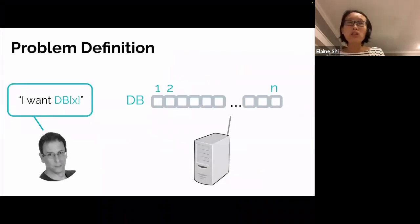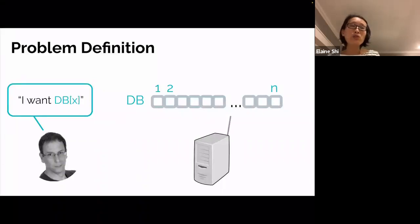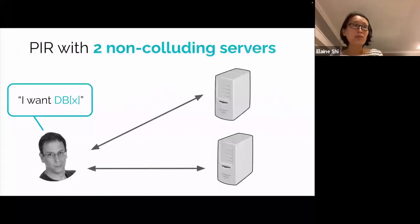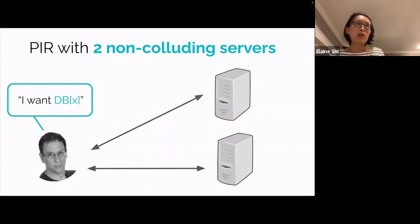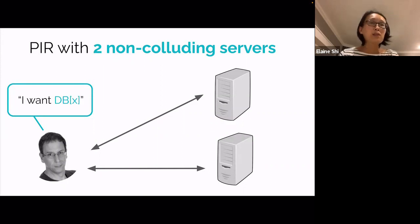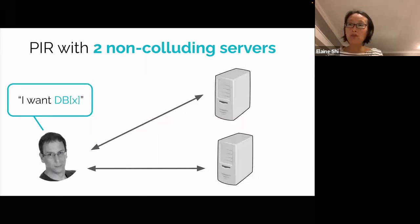More abstractly, imagine the database contains n bits. The user wants to retrieve the bit at some position x, also called the index, and the user doesn't want to reveal x to the server. In this talk, we will focus on the two-server scenario. Assume there are two servers that are non-colluding; we want to make sure that from each individual server's view, nothing is leaked about the user's query. Compared with the single-server setting, the two-server setting can often result in more efficient schemes.